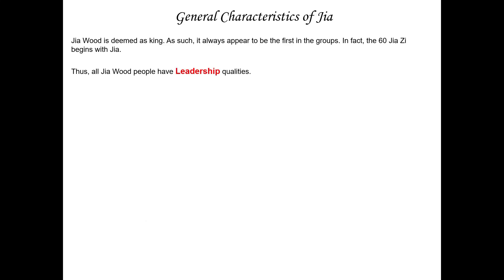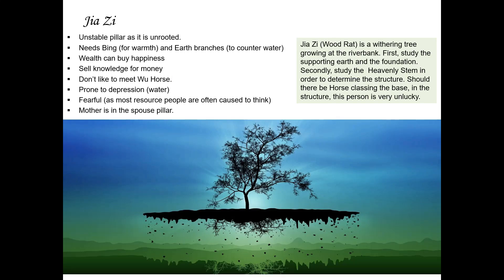The key characteristics of Jia Wood include leadership. The physical trait is typically tall — we would expect to see a tall Jia Wood person. If the person is born short and stumpy, this might not be the best expression of Jia Wood. Now let's look into the six types of Jia Wood.